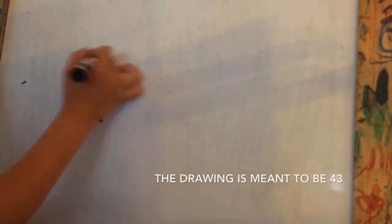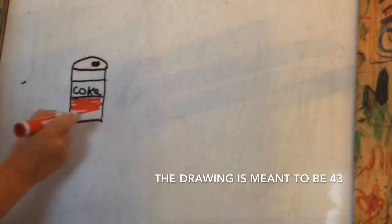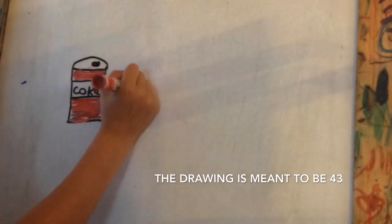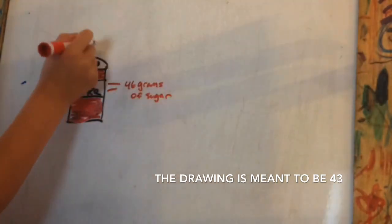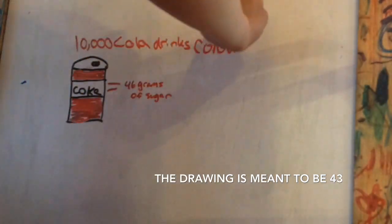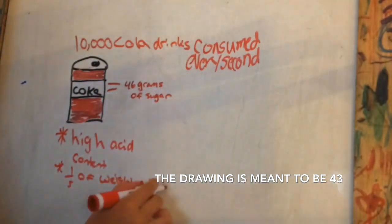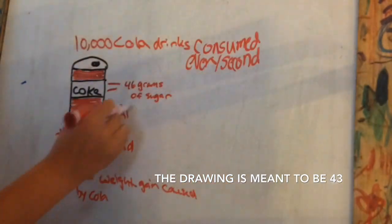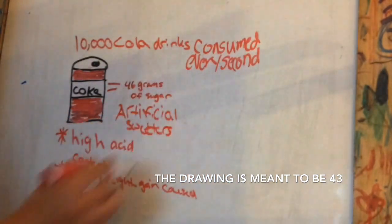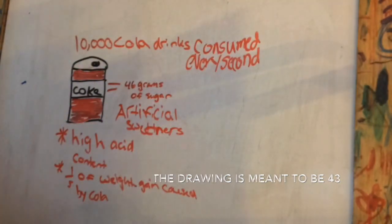Next up on the machine, we have Coke, one of the most favorite drinks. But did you know that it has 46 grams of sugar? 43 Coke bottles on average are consumed by Americans each year. Like orange soda, it has a high acid content, which erodes the enamel on your teeth. Approximately one-fifth of weight gain is caused by sugary drinks, and on top of the 43 grams of sugar, there are artificial sweeteners like caramel flavoring.